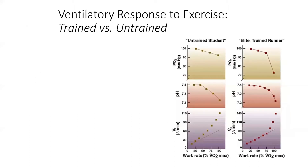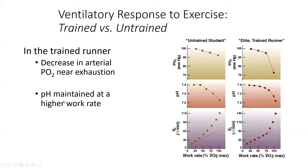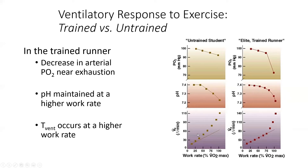Compared to untrained individuals, elite athletes can work at very low partial pressures of oxygen and maintain a higher blood pH at greater work rates — the body doesn't become acidic as quickly. Ventilatory threshold occurs sooner in untrained individuals compared to elite athletes. As athletes become more energy efficient, they can stave off acidity longer, so breathing is less frequent and exercise feels more efficient both physiologically and perceptually.